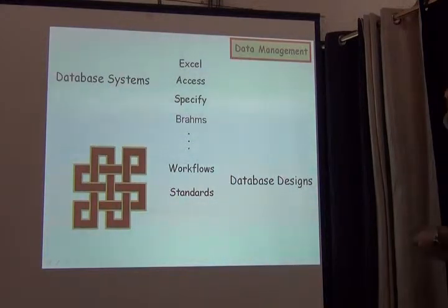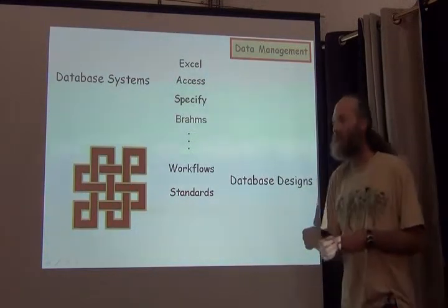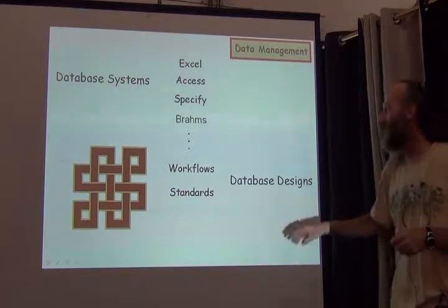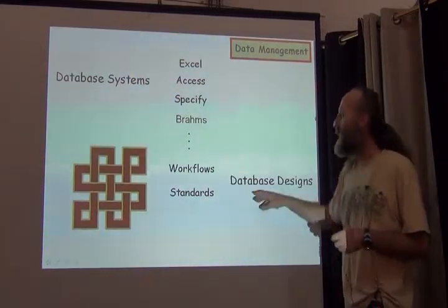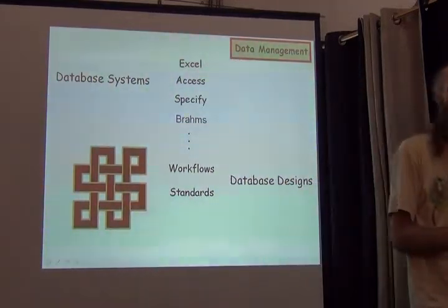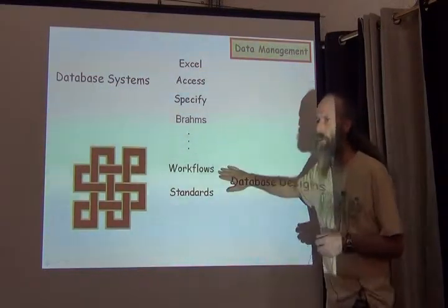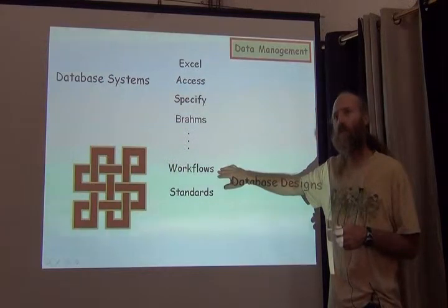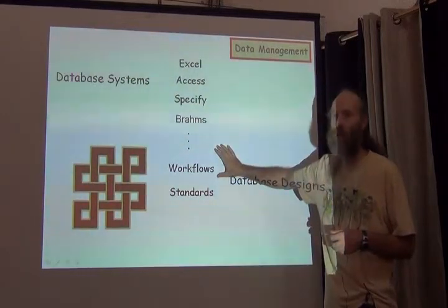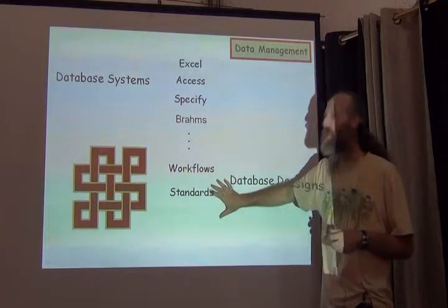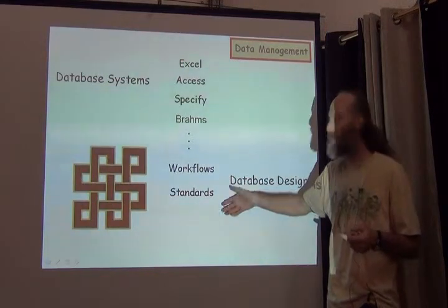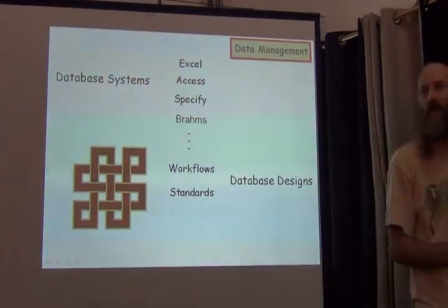In doing so, we need appropriate tools — database systems capable of tracking and not corrupting our data. They need to be designed for the workflows involved and, looking forward to sharing, designed around standards so that data can be shared. Those standards may exist within our own institutions or be shared across institutions. And certainly when we start sharing data, in order to speak to each other with the same language, we need standards for data sharing — and that's where Darwin Core comes in.